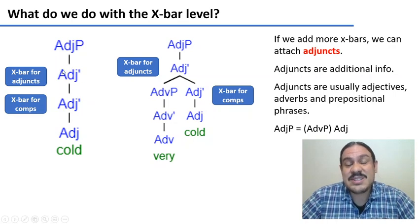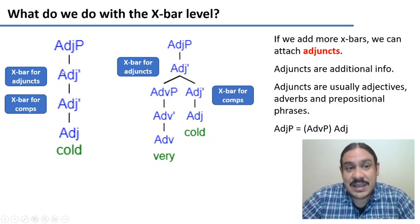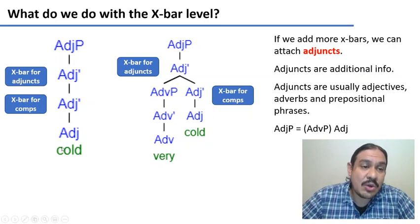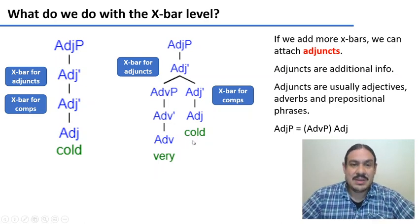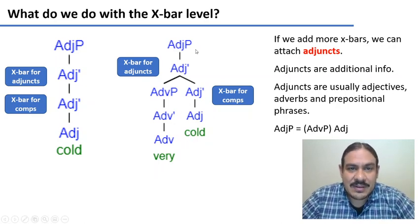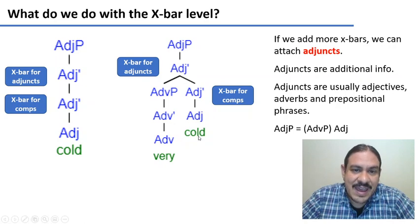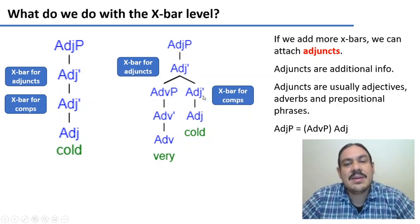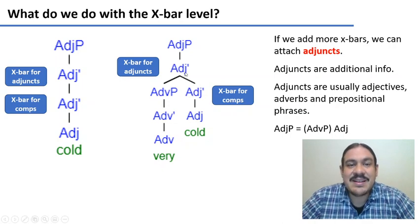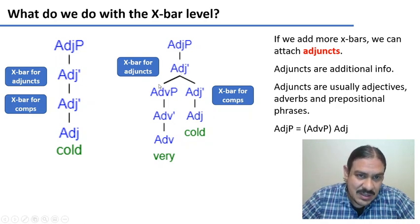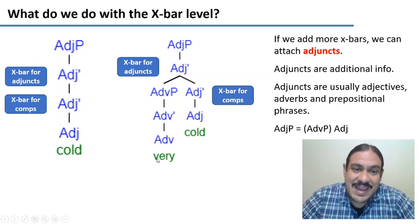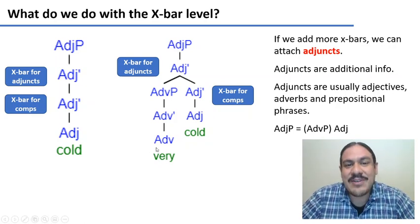Each phrase has specific kinds of adjuncts that it can take. For example, adjectives like 'cold' can take adverbs like 'very' — for 'very cold.' As you can see, we have the adjective phrase, which has the adjective head 'cold.' It has one X-bar for a potential complement, and then another X-bar for the adjunct. So we project the adverbial phrase with its own X-bar and its own head, 'very' — 'very cold.'